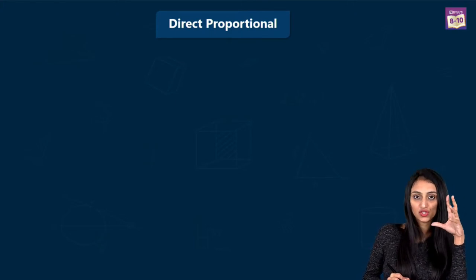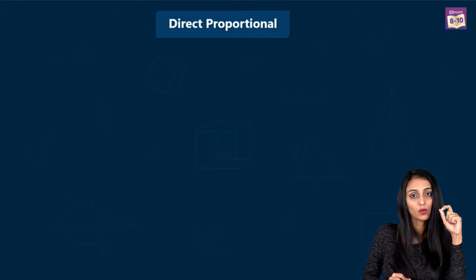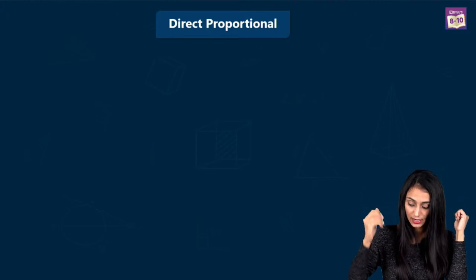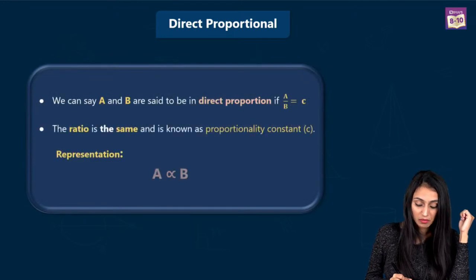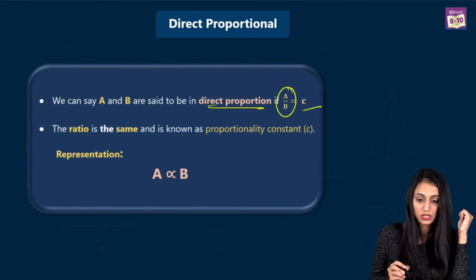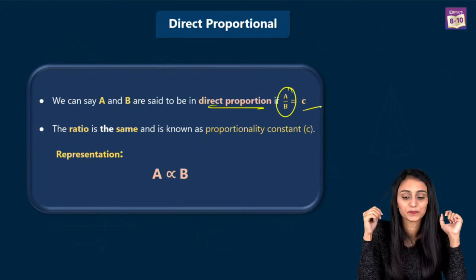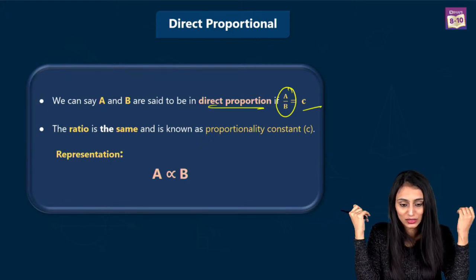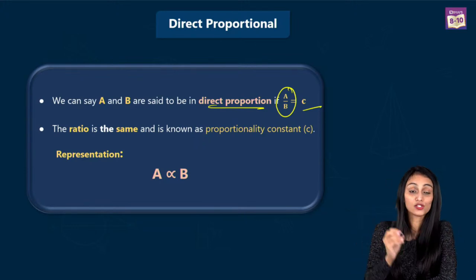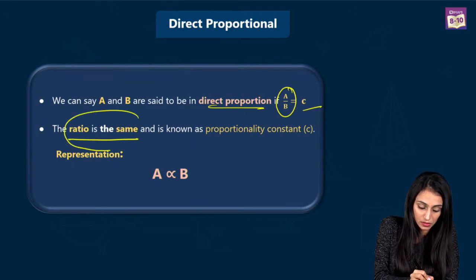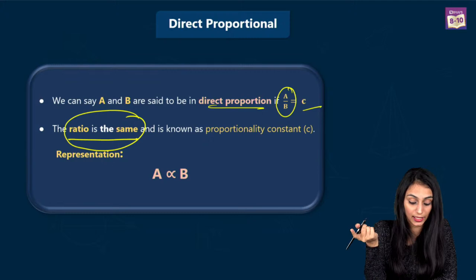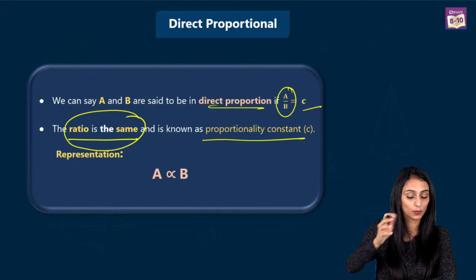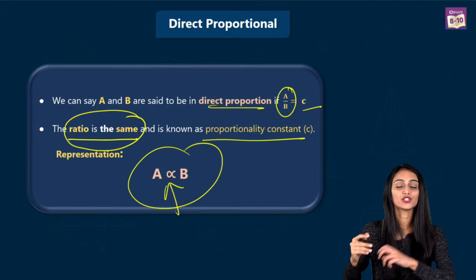From here, we can conclude: if two measurable quantities are in direct proportion, then if one quantity is increasing, the other one will also increase, and vice versa. The two quantities would be similar in nature. Let's suppose we have two quantities A and B. They are said to be in direct proportion if A by B is equal to C, where C is known as the proportionality constant. Also, the ratio is going to be the same when the quantities are in direct proportion.